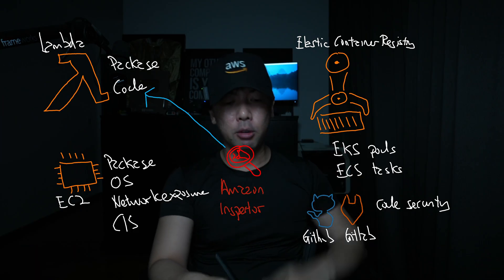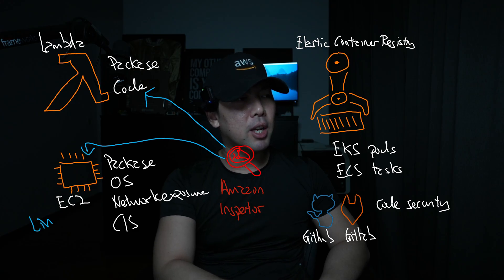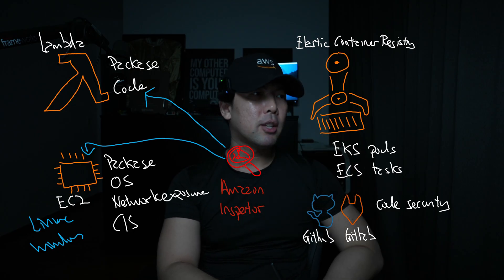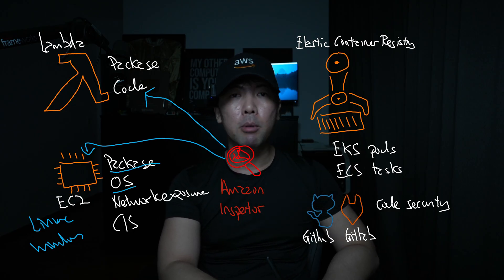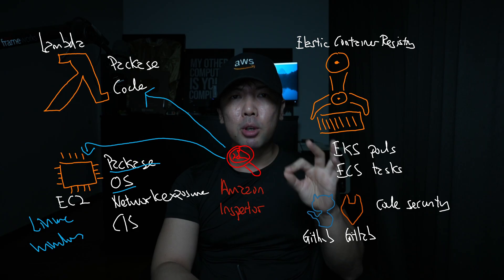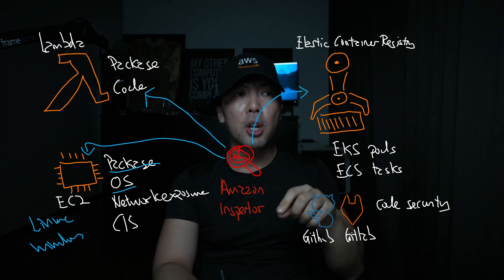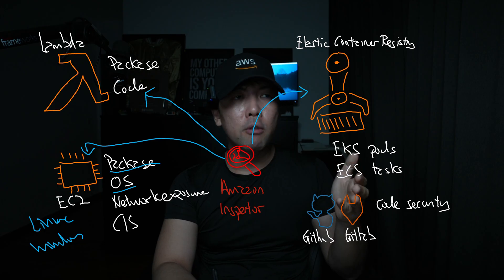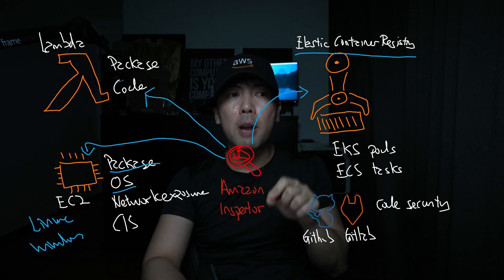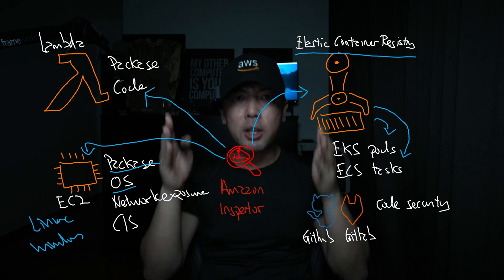The next supported resource type is your EC2 virtual server. Amazon Inspector supports both Linux and Windows operating systems on EC2. For Linux, you get deep package inspection on top of OS vulnerability detection available for both platforms. The next supported resource is Elastic Container Registry, where container images are pushed into ECR and we can detect vulnerabilities in those images, including those running across your EKS pods and ECS tasks.